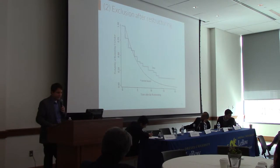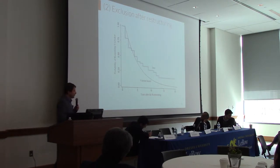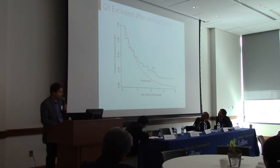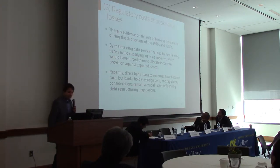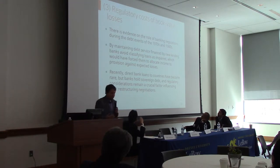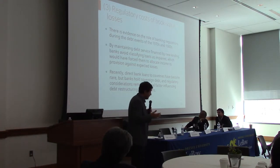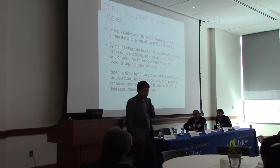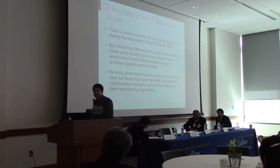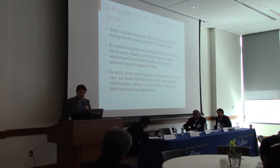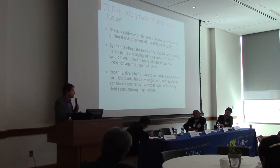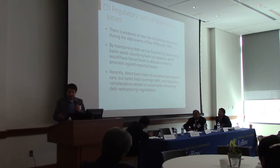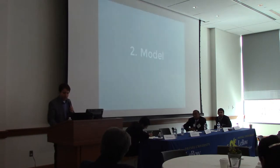What we do in the model is introduce this 75% exclusion probability. Regarding regulatory costs, it is clear there are regulatory costs for banks from face value haircuts. This played a very important role in the Latin American crisis of the 1980s where the debt was owed directly to banks, and it also played a role in the recent European crisis. That is the third thing we incorporate.